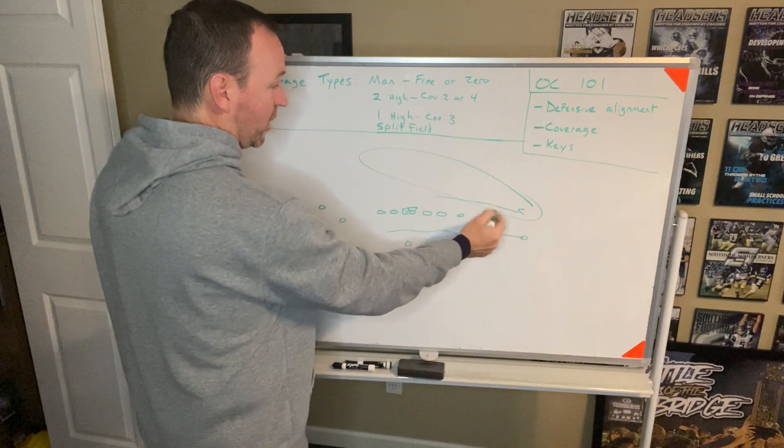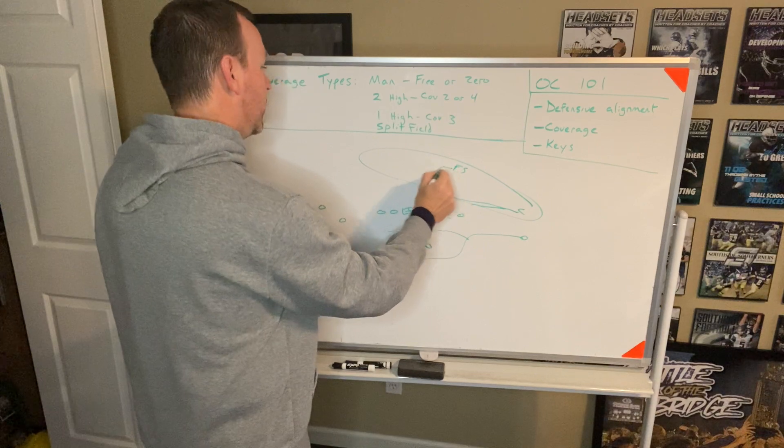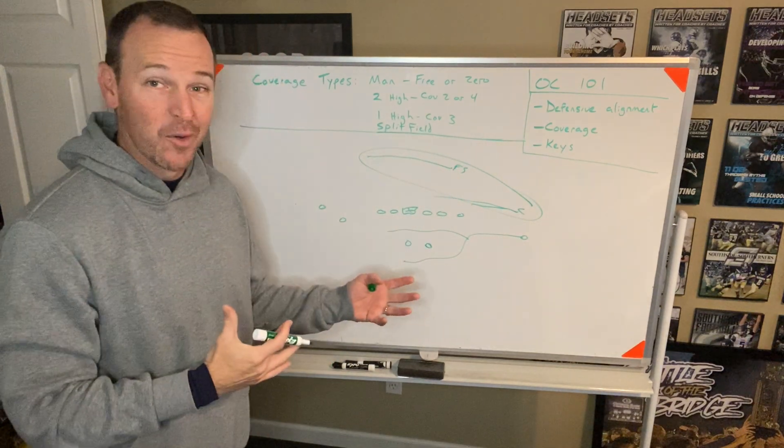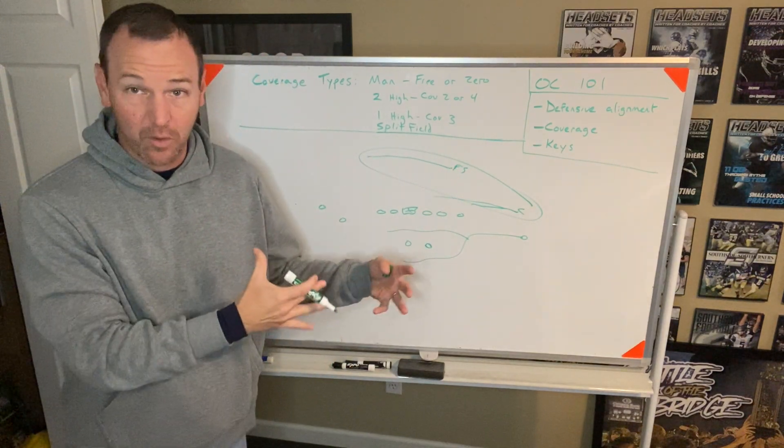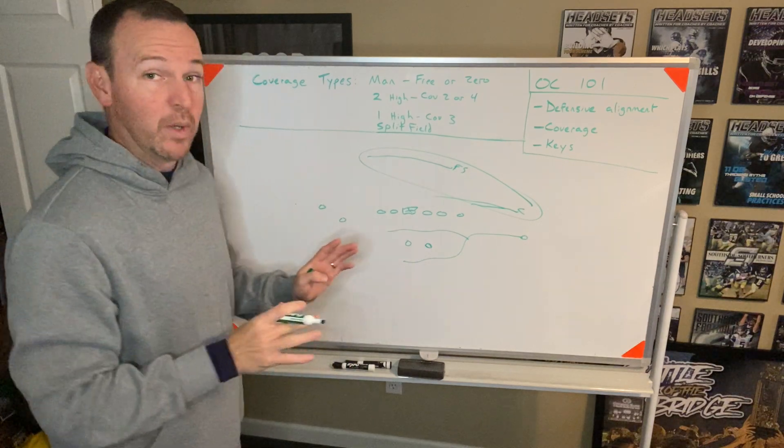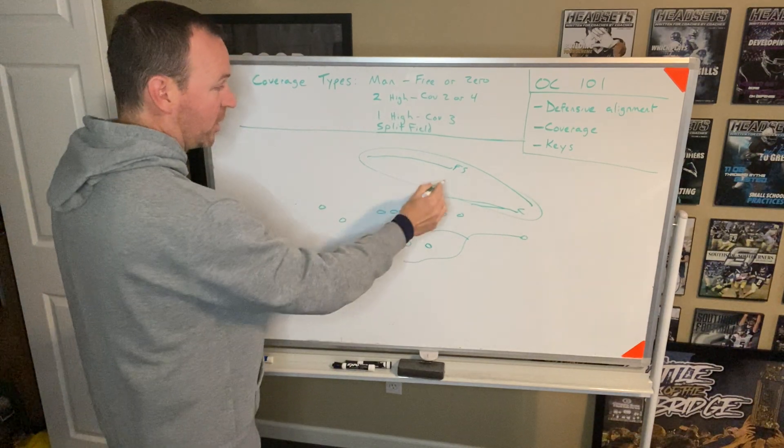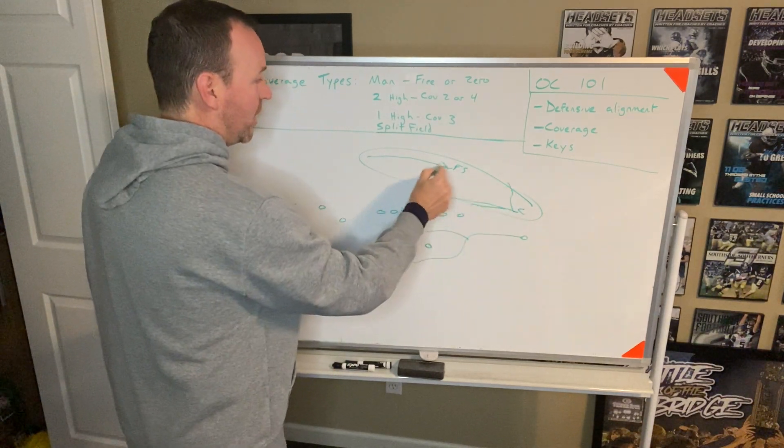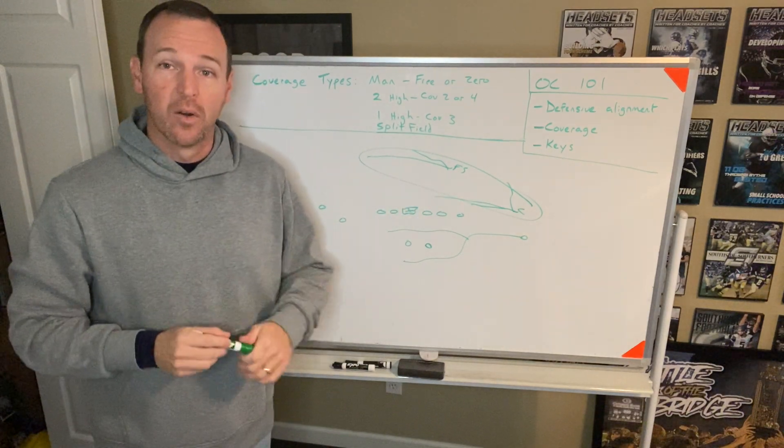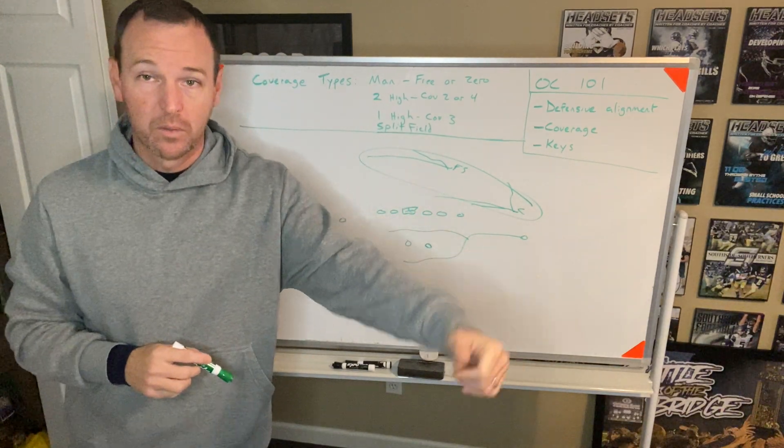They could also try to shift, so they could go here and then this safety could shift over. That's another predictor that it is some flavor of man as well. If you don't get a lot of movement, you may get a little shift, like you may kind of shift here and you may shift here. That's usually an indicator that you're getting zone coverage.